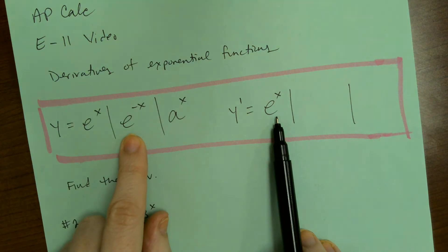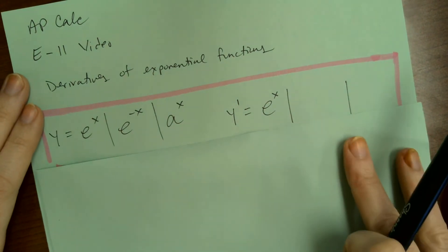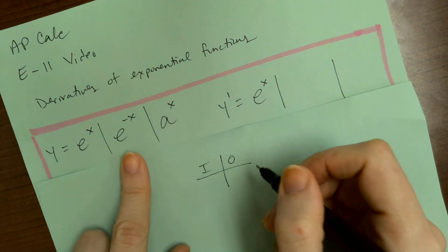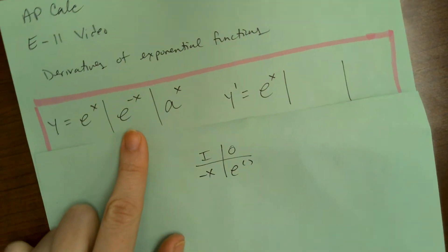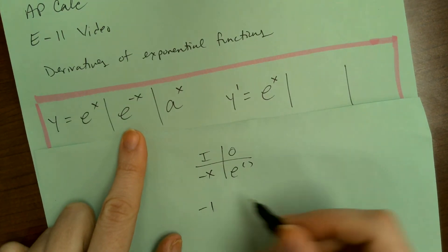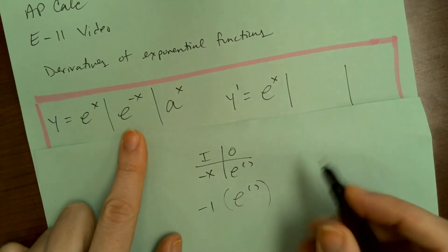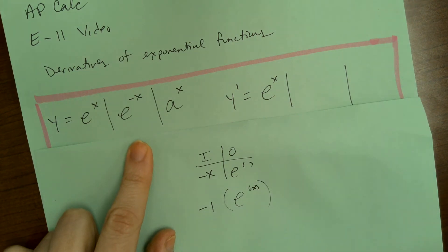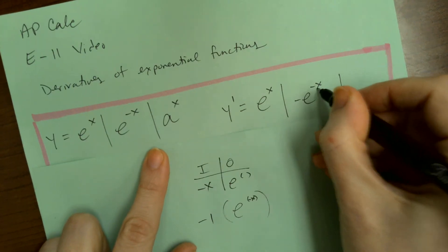Now, for e to the negative x, you can just use chain rule. The inside is negative x and the outside is e to the blank. The derivative of negative x is negative 1; the derivative of e to the blank is e to the blank; and then negative x goes back in. So the derivative of e to the negative x is negative e to the negative x.